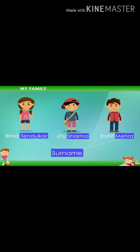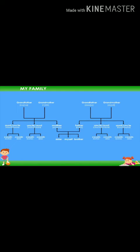All the family members have good relations among them. Now let us understand these relations. Father's father or mother's father is your grandfather. Father's mother or mother's mother is your grandmother. Father's brother or mother's brother is your uncle. Father's sister or mother's sister is your aunt. The wife of your father's brother or wife of your mother's brother is also your aunt. Children of your uncles and aunts are your cousins — they are really good friends.